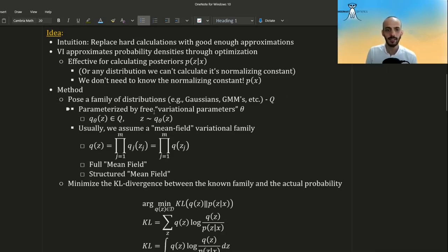And this family is parameterized by free variational parameters, which we will denote by theta. So for example, in the Gaussians, the theta are the mean and standard deviation or covariance matrix depending on the dimensionality. So we will denote each variational distribution by Q of Z parameterized by theta.